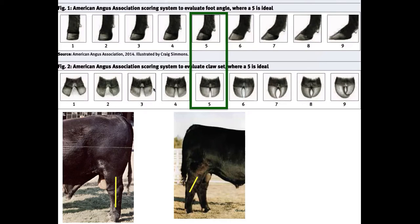Claw set is another thing to look at, though I look at foot angle a little more. You don't want toes crossing over — that gets painful and causes lameness — and you don't want very small claws that are really splayed out, which isn't good from a longevity standpoint either. Spending a little time looking at the feet on those bulls is very informative about the structure of the rest of the animal because those things are tied in together.